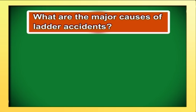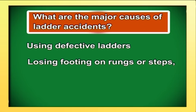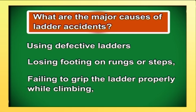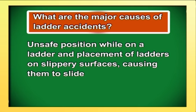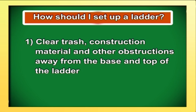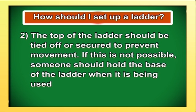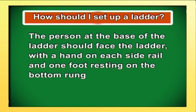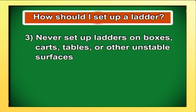Major causes of ladder accidents include using defective ladders, losing footing on rungs or steps, failing to grip the ladder properly while climbing, unsafe position while on a ladder, and placement of ladders on slippery surfaces causing them to slide. Defective ladders should not be used — in the workplace they should be taken out of service. Do not make temporary repairs to a ladder. To set up a ladder: clear trash, construction material and other obstructions away from the base and top. The top should be tied off or secured to prevent movement. If not possible, someone should hold the base facing the ladder with a hand on each side rail and one foot on the bottom rung. Never set up ladders on boxes, cards, tables or other unstable surfaces.